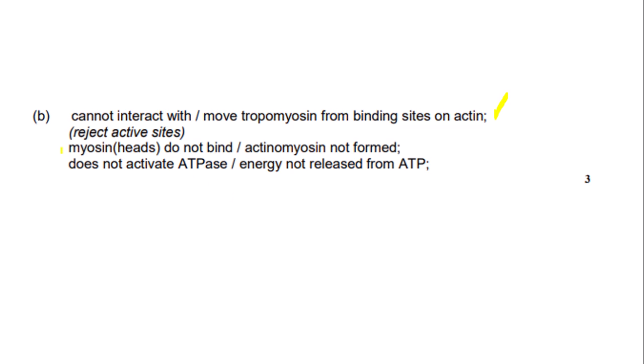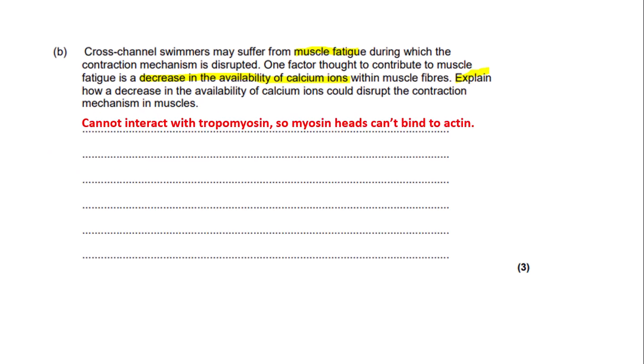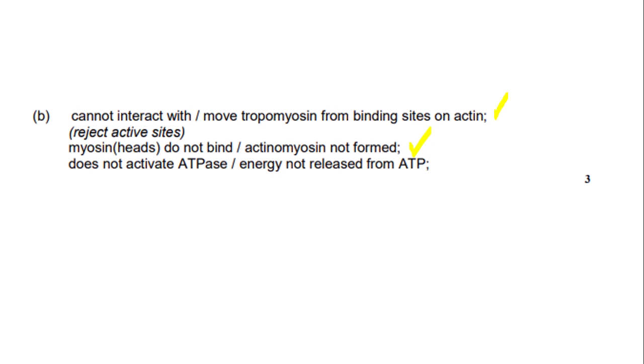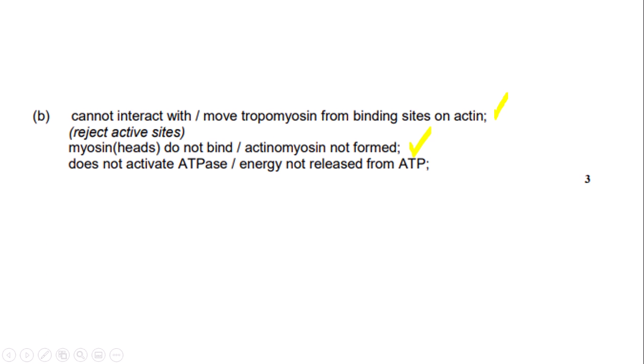You could also have written that myosin heads do not bind or that an actin-myosin cross-bridge is not formed. I did forget to include the third marking point — you also need to make reference to ATPase or ATP, for example that calcium ions do not activate ATPase or that energy is not released from ATP. You need to reference ATP to get all three marks. That is all for this video — thank you very much for watching. If you have any questions, please leave them in the comments and I'll be happy to answer them.